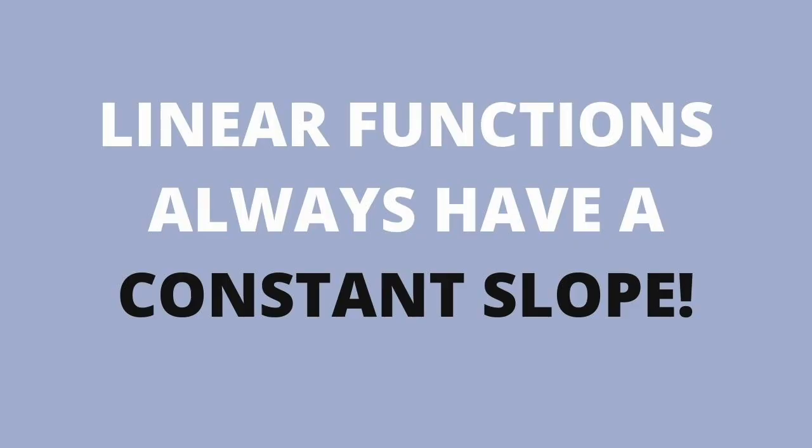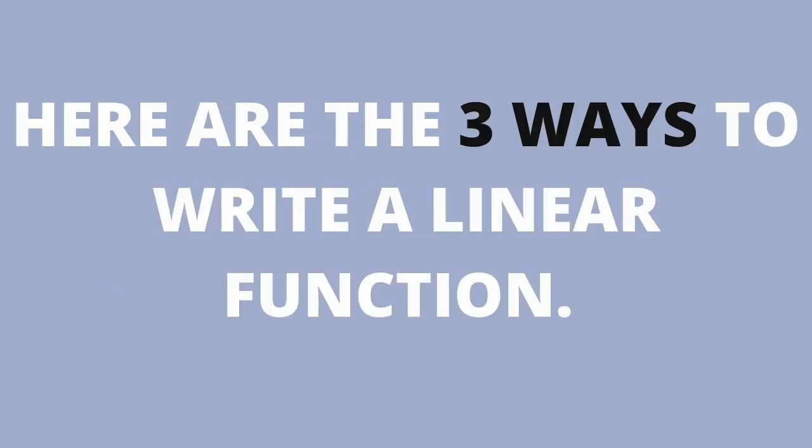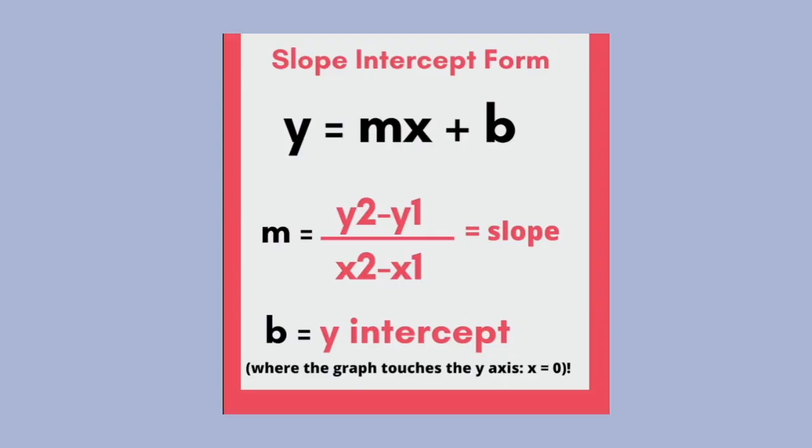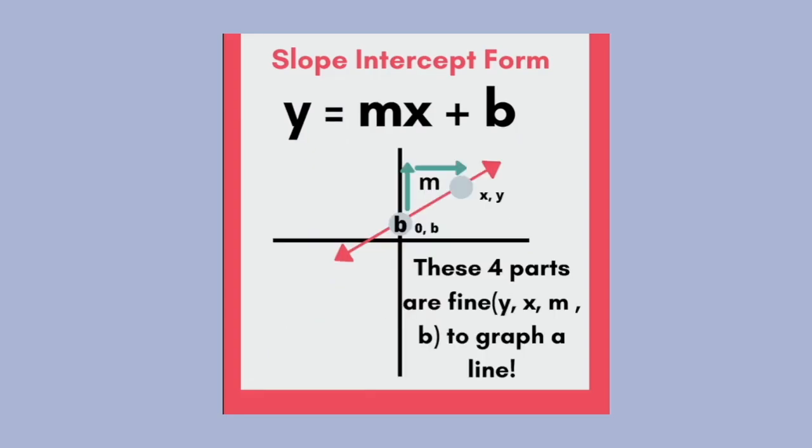Linear equations always have a constant slope. There are three different ways to write a linear equation. Slope-intercept form: y = mx + b, where m is the slope of the line and b is the y-intercept.